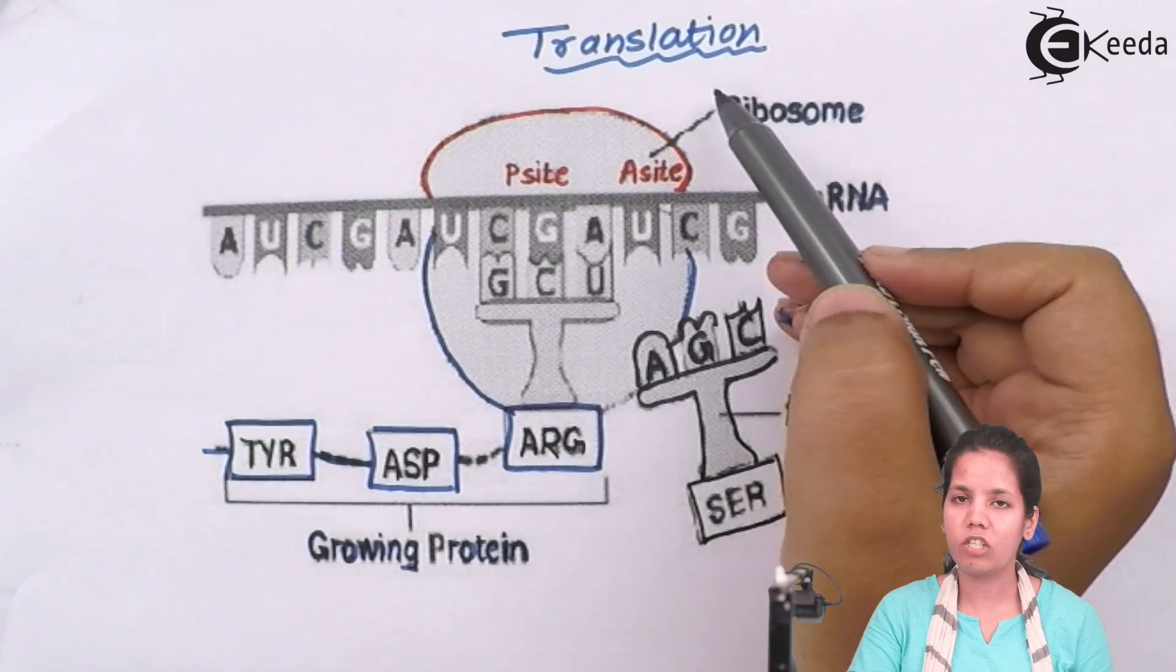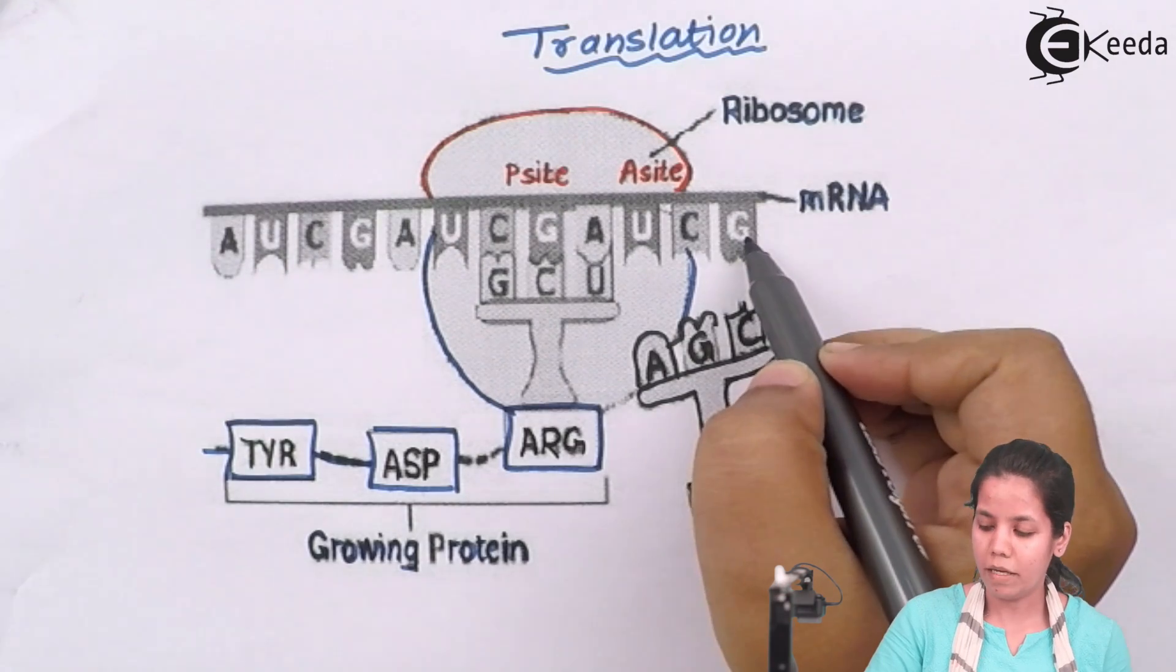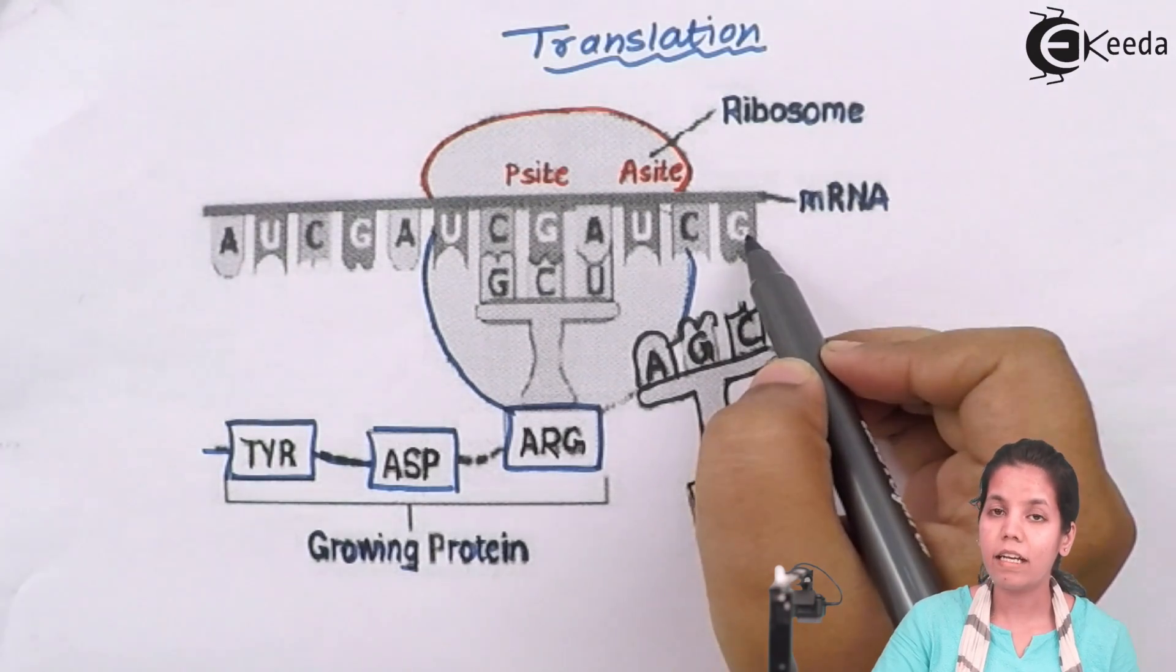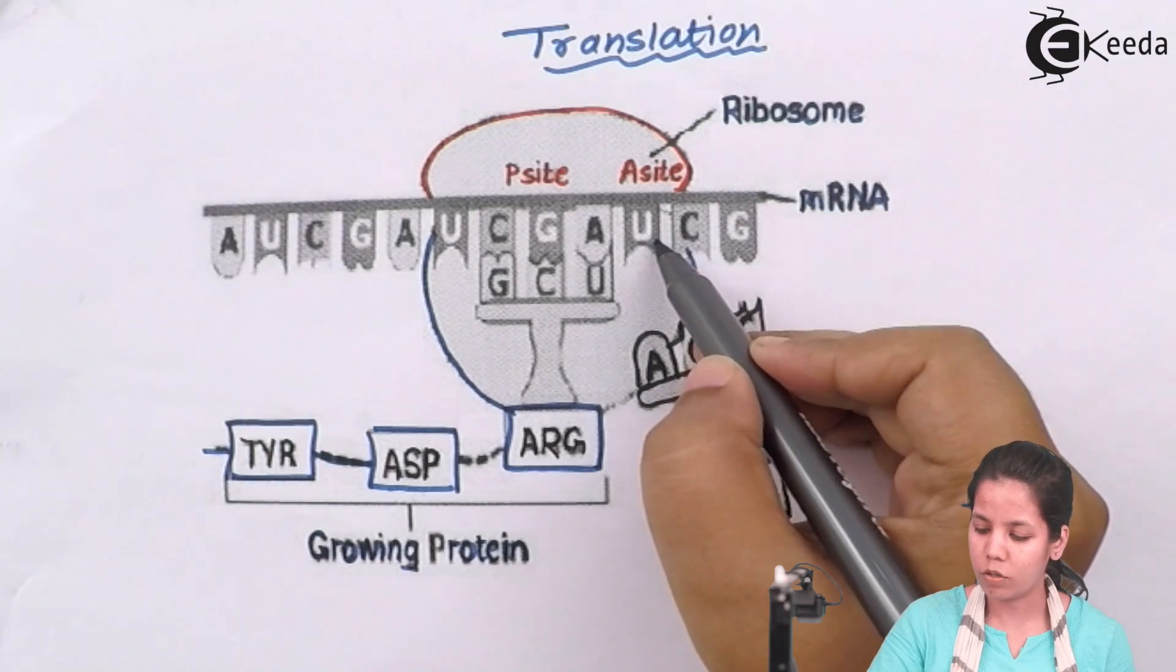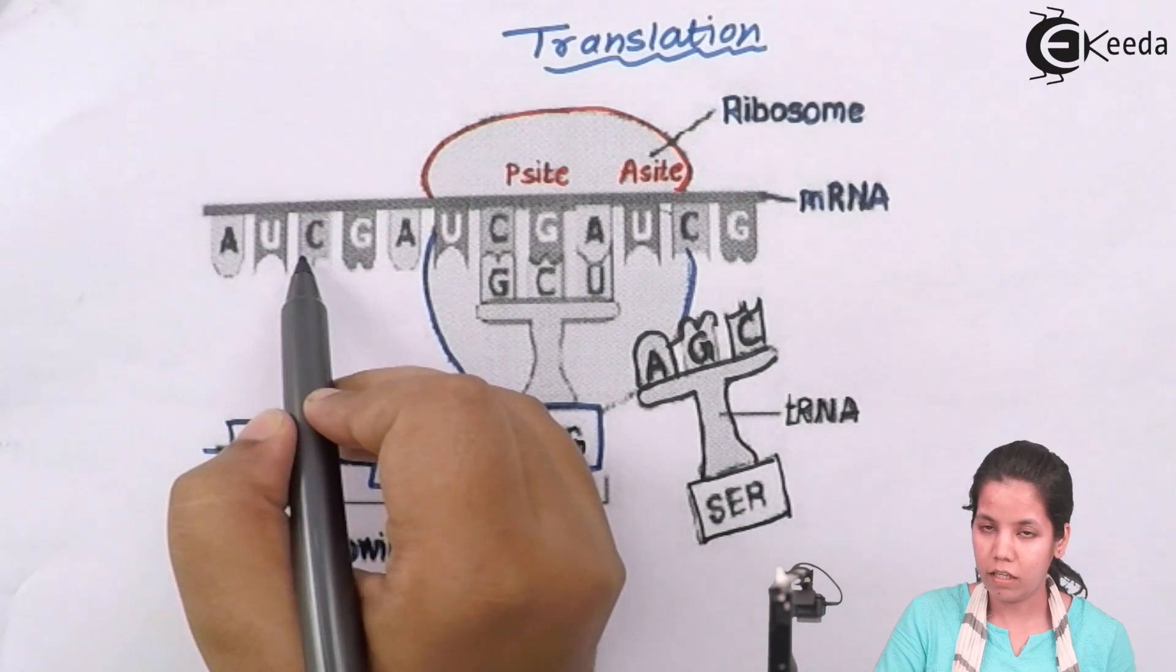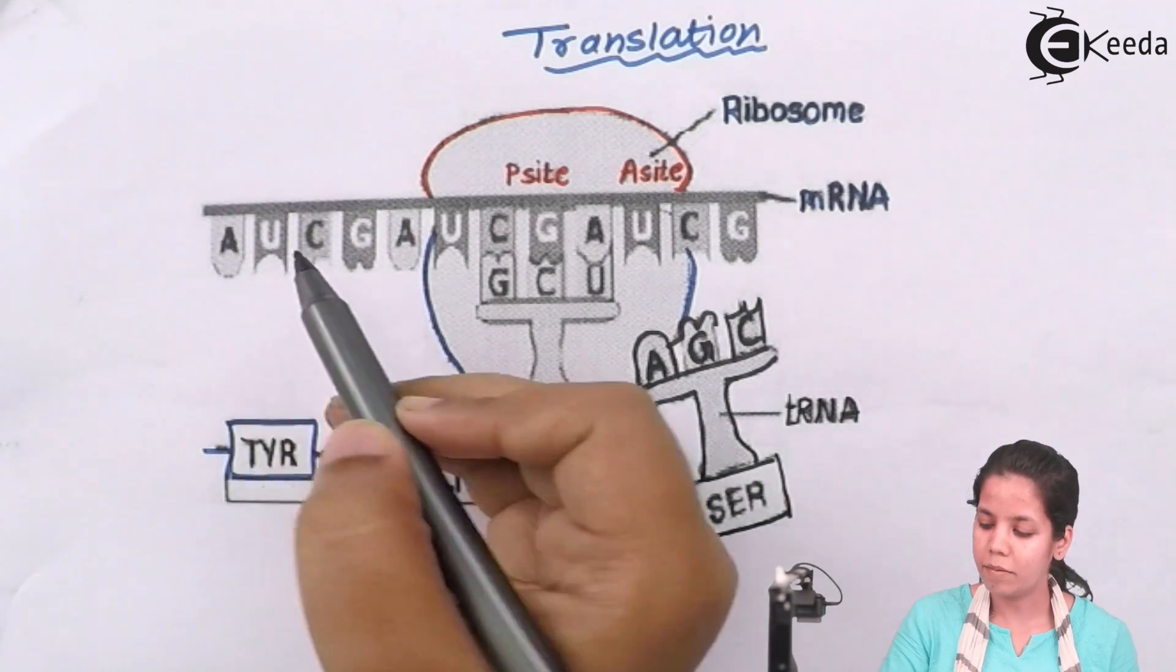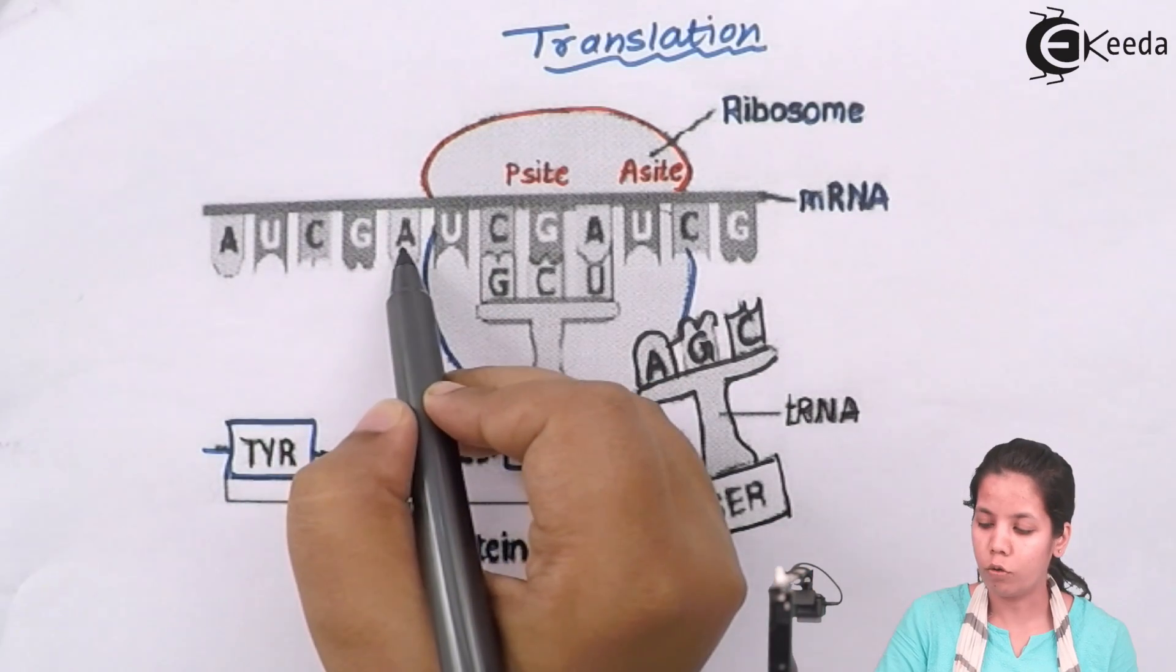Students, this is translation process. Now, this is your mRNA or your messenger RNA. Now, this mRNA or messenger RNA has triplet codons for synthesis of proteins. As you can say, AUC is the first codon that codes for a protein, methionine. Similarly, these are other codons in the form of three that codes for protein.